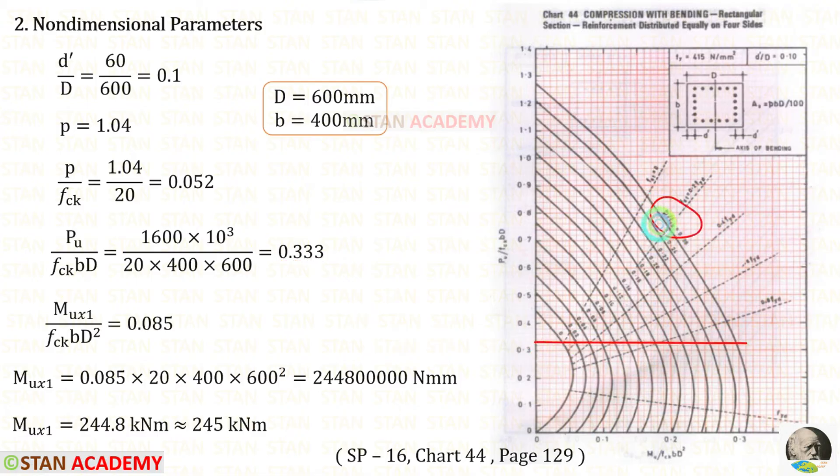p upon fck is 0.052. This is the curve of 0.04 and this is the curve of 0.06. 0.05 comes in between both of them. So, we have to make a vertical line in between. This point comes between 0.08 and 0.09. So, let us keep mu upon fck·b·D² approximately 0.085 because it comes between both of them.